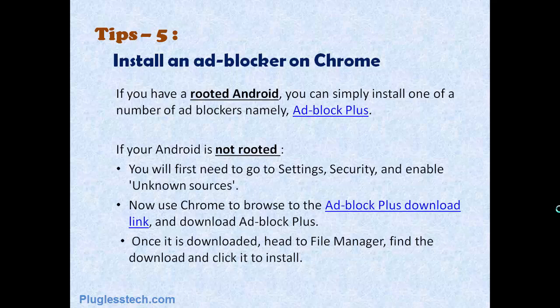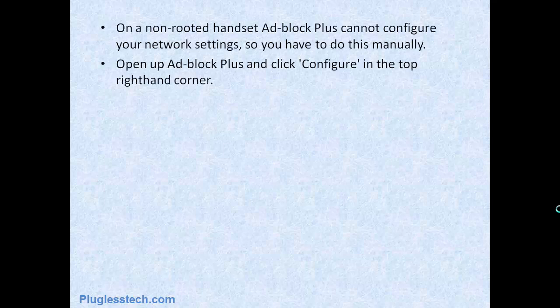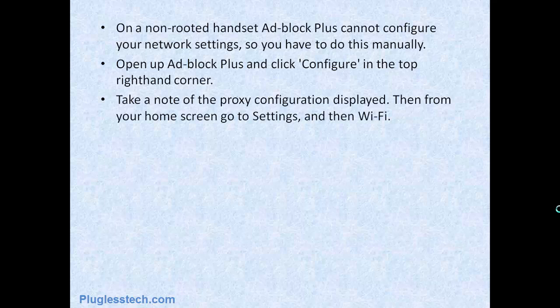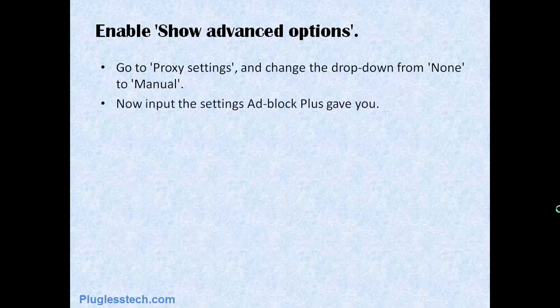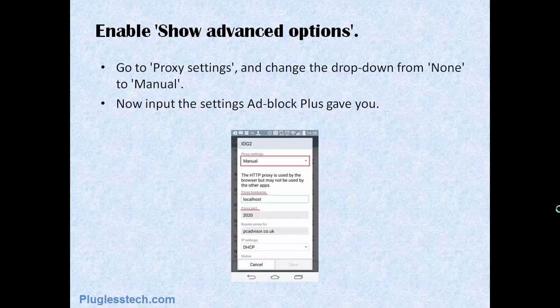Once it is downloaded, head to File Manager, find the download and click it to install. On a non-rooted handset, Adblock Plus will not configure your network settings, so you have to do these manually. Open up Adblock Plus and click Configure in the top right-hand corner. Take a note of the proxy configuration displayed, then from your home screen go to Settings and then Wi-Fi. Long press the network you are connected to and select Modify Network. Now show Advanced Options. Go to Proxy Settings and change the drop-down from None to Manually. Now import the settings that Adblock Plus gave you.